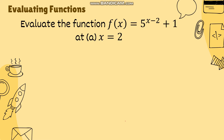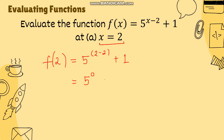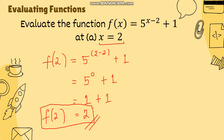Another example: evaluate the function f(x) = 5^(x−2) + 1 at x equal to 2. Substituting, f(2) = 5^(2−2) + 1. Simplifying, 2 minus 2 is 0, so we have 5^0 + 1. Any number raised to 0 is equal to 1, so we have 1 plus 1. Therefore, f(2) is equal to 2. So if the input is 2, the corresponding output is also 2.